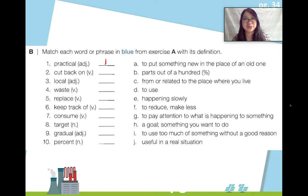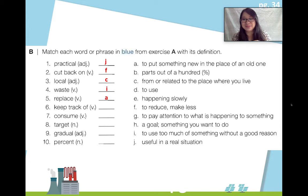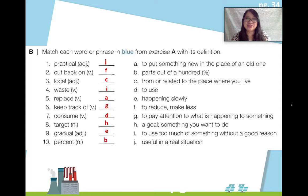Let's check your answers. Practical: useful in a real situation. To cut back on is to reduce or make less. Local: from or related to the place where you live. Waste: to use too much of something without a good reason. Replace: to put something new in place of the old one. Keep track of: to pay attention to what is happening to something. Consume: to use. Target: a goal or something that you want to do. Gradual: happening slowly. And finally, percent: parts out of a hundred.